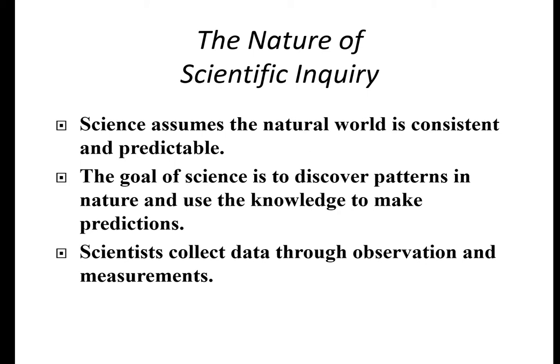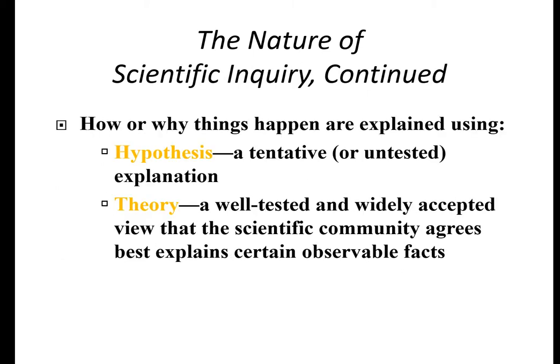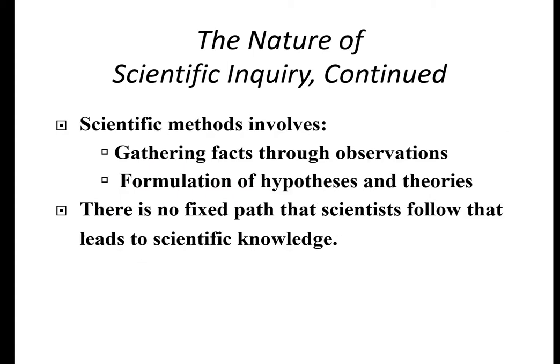Let's talk about how we do science. Science assumes the natural world is consistent and predictable. The goal of science is to discover patterns in nature and use that knowledge to make predictions, using observations and measurements. One of the first things we need is a hypothesis — an educated guess, a tentative or untested explanation. A theory, though, is a well-tested and widely accepted view that the scientific community agrees best explains observational facts. There is no fixed path scientists follow, but we use the scientific method as a guidepost.